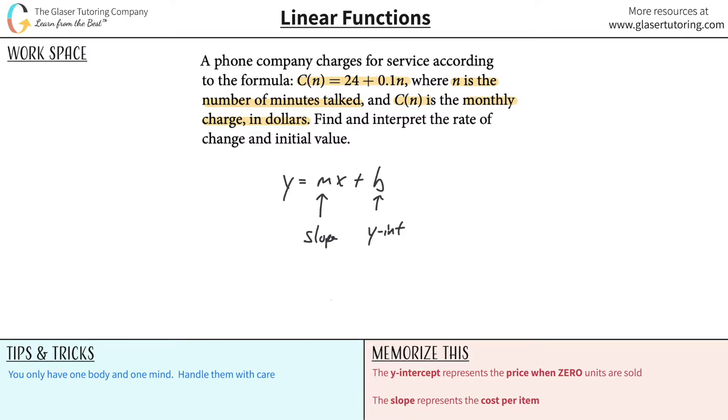So in terms of linear equations and economics, these variables take on additional context to them. The slope we can think of is basically the rate of change. It's the rate of change of the function.